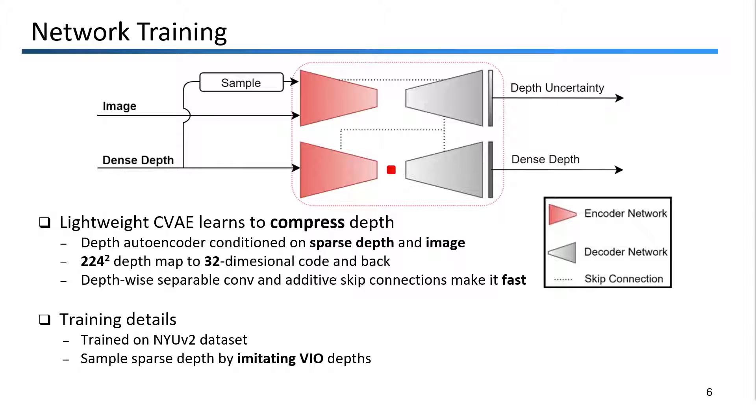We train this network on the NYU dataset, which is a popular depth dataset containing a large amount of RGBD images. For ease of training, we simply sample the sparse depths from the ground truth depth maps, and we imitate the VIO sparse depths by sampling from fast corner locations, adding noise, and randomly varying the number of points that we sample.